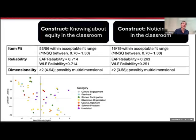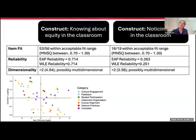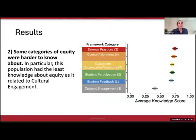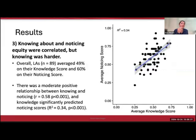Looking at this scatter plot, we can see that for knowing about equity in the classroom, across the framework categories it's kind of a mishmash—we don't see cultural engagement clustered in one space, feedback clustered in another; they're all mixed around. There's work to be done to figure out how they're multi-dimensional. Another result: some categories of equity were harder to know about. Cultural engagement had a lower average knowledge score than the other framework categories. Finally, knowing about and noticing equity were correlated but knowing was harder—overall 49% average scores for knowledge but 60% average scores for noticing, with a moderate positive relationship of R = 0.58.